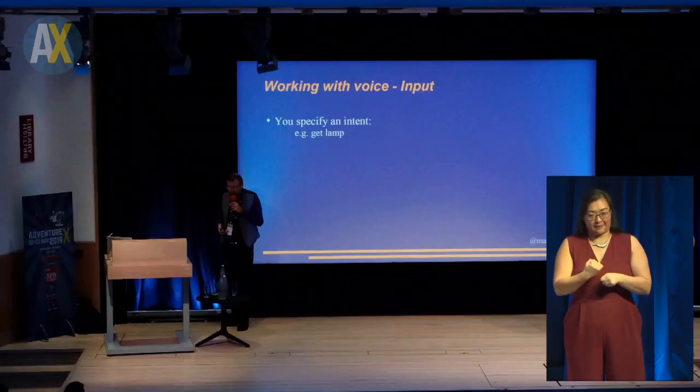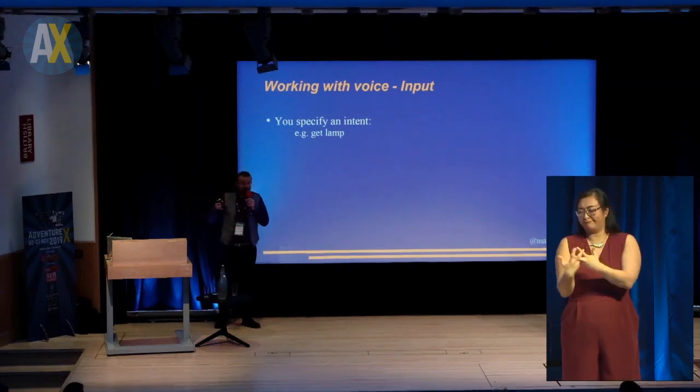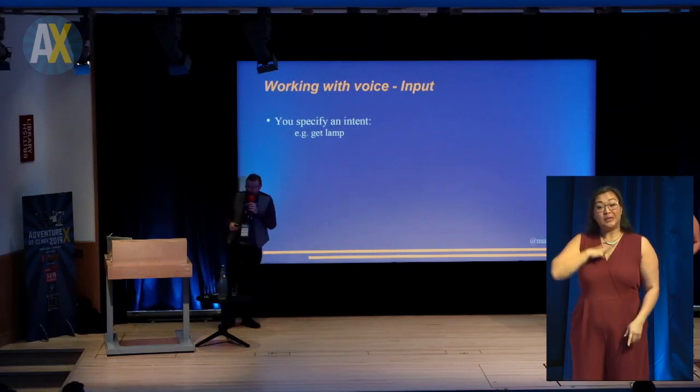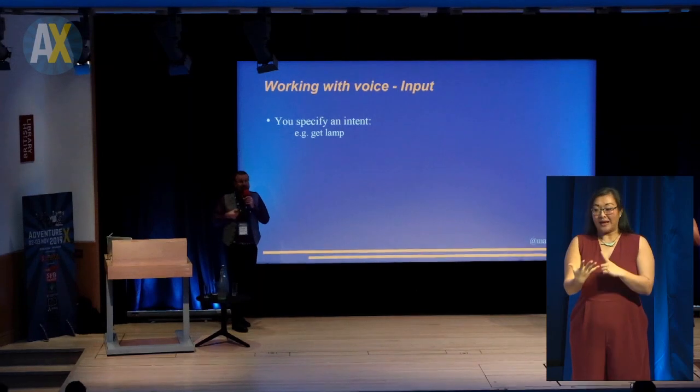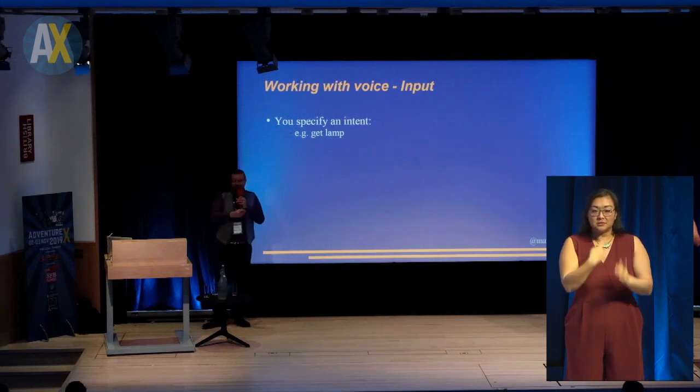The way I'm going to go through this is very Alexa-specific, but it's probably true in most voice systems. You have to specify an intent to the Alexa system — for example, get lamp or get an item. The intent is: I wish to get something. Whenever the player says get, it calls one piece of code that does the get action. You then have to specify the different ways you can say get: get the lamp, take the lamp, pick up the lamp, pick up an axe, pick up a axe — every variation of get, pick, take has to be put in one section. Alexa will match that for you automatically.